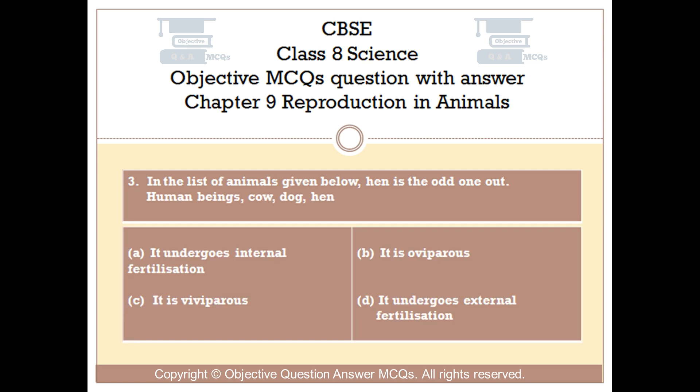Question number 3. In the list of animals given below, hen is the odd one out: human beings, cow, dog, hen. Option A: It undergoes internal fertilization. Option B: It is oviparous. Option C: It is viviparous. Option D: It undergoes external fertilization.